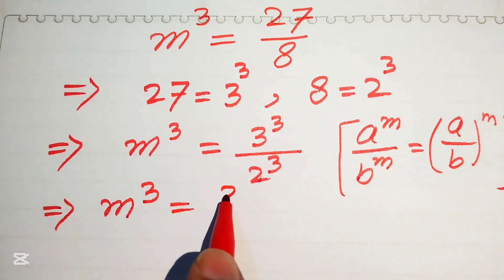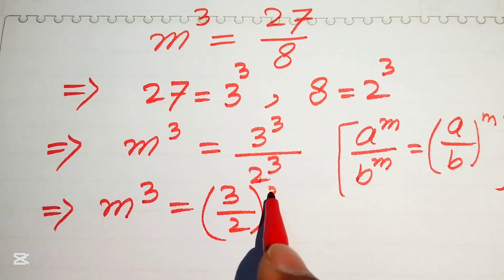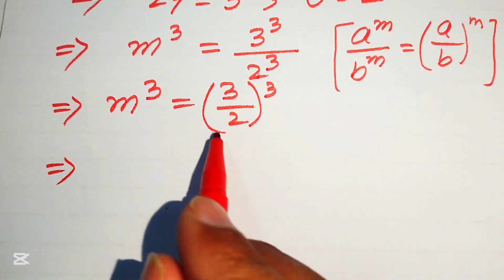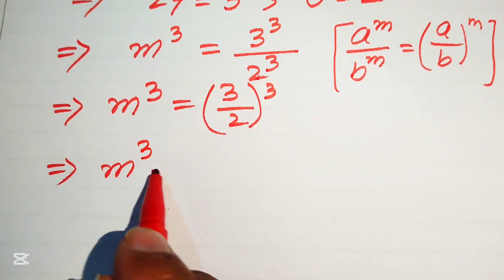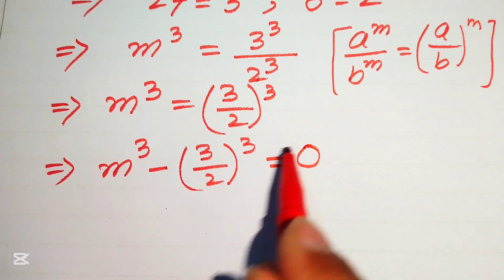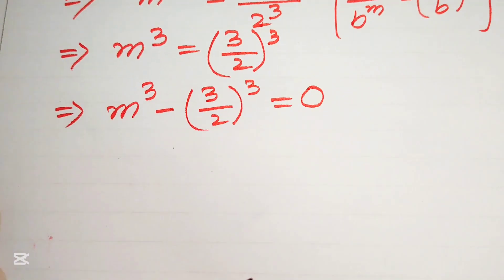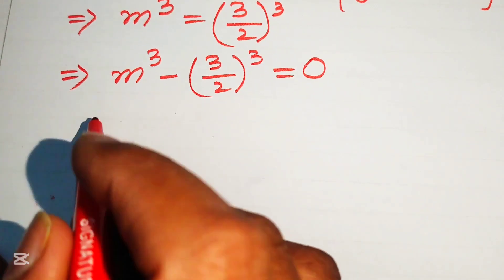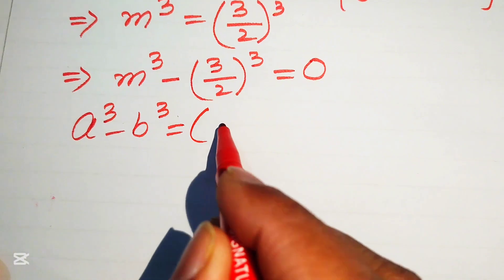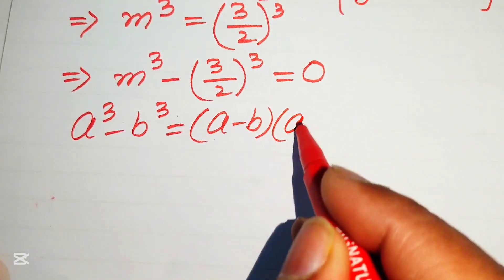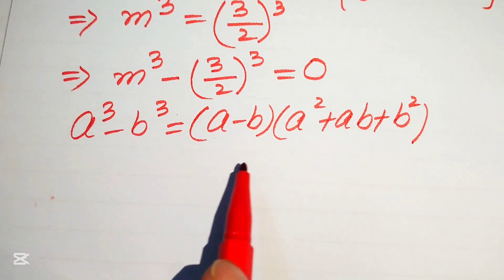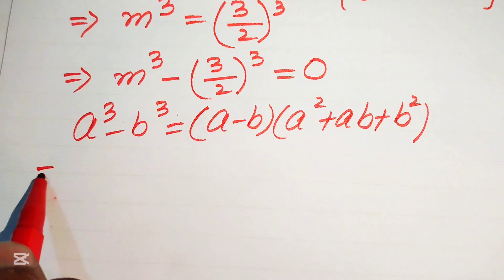This gives us m³ = (3/2)³. Moving (3/2)³ to the left-hand side, we get m³ − (3/2)³ = 0. Now we apply the difference of cubes formula: a³ − b³ = (a − b)(a² + ab + b²).